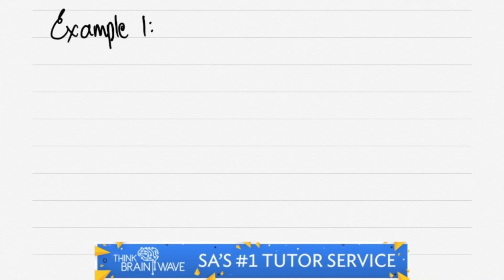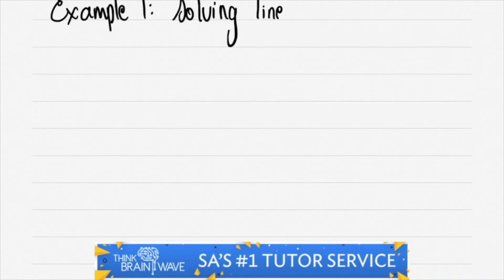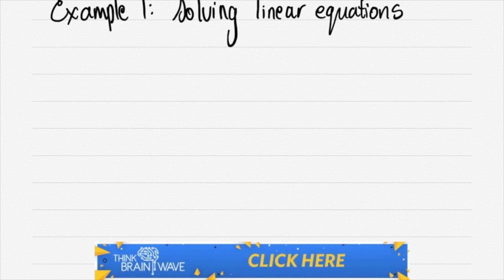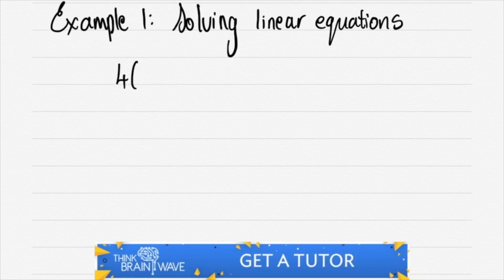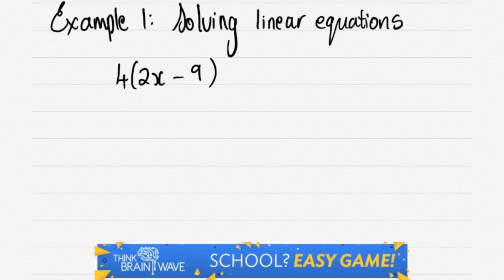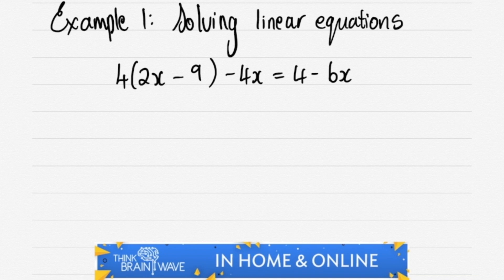Let's do an example. Solving linear equations as follows. We start off by saying 4 with our brackets 2x minus 9 and then minus 4x is equal to 4 minus 6x.